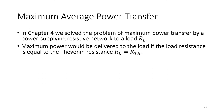We have seen in DC analysis that power is transferred from source to the load. In order to get maximum power transfer to the load, we need to get the Thevenin equivalent resistance of the network equal to the load resistance. This was the condition studied in chapter 4 — for maximum power transfer to the load RL, its value should equal the Thevenin equivalent resistance of the circuit.